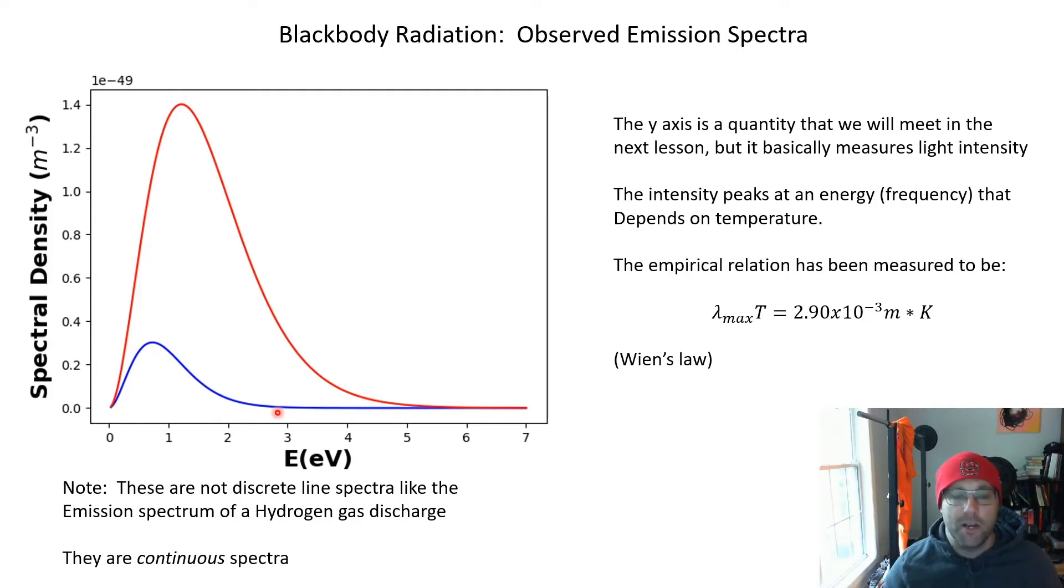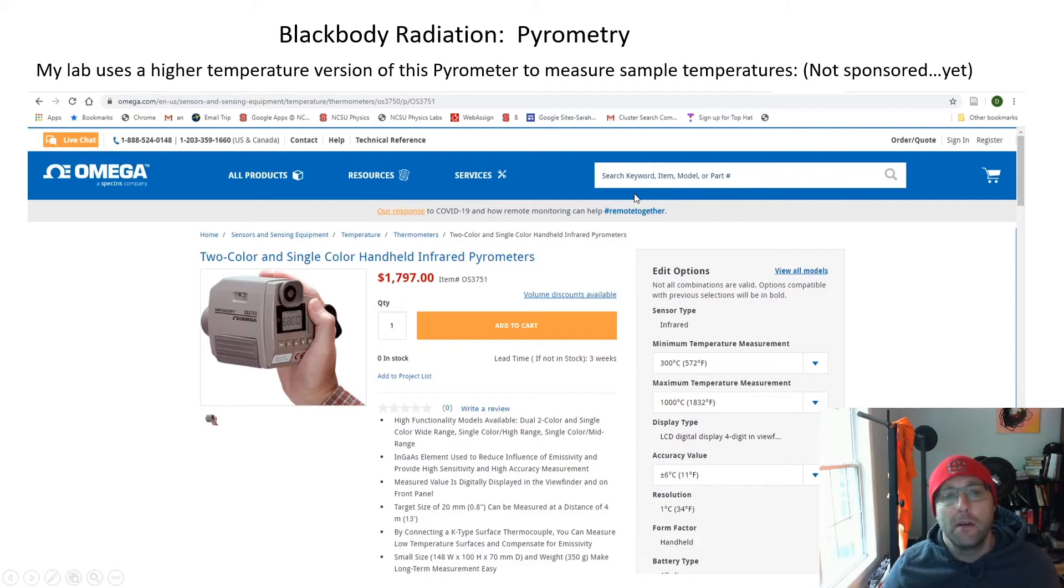One thing I want to point out is that when we're thinking about this, this is a hot object, it's basically emitting incoherent radiation. And so what you're seeing is a continuous spectrum. All of these energies or all of these frequencies or all of these wavelengths have light being emitted at them. They're not discrete emission lines like you would see in like a neon lamp if you look through a diffraction grating or something. So it's a continuous spectrum, but the shape of the spectrum needs to be understood.